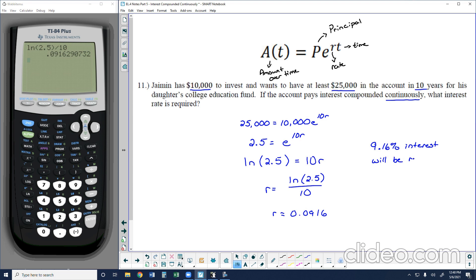Because this scenario was compounded continuously, we could use the equation listed above, substitute in the information that we know, and then solve for the information that we do not. You could also solve this graphically by graphing the equation 10,000 times E to the 10R power and graphing the line Y equals 25,000 and finding the intersection. This would be a viable method. And let's go ahead and take a look at that.